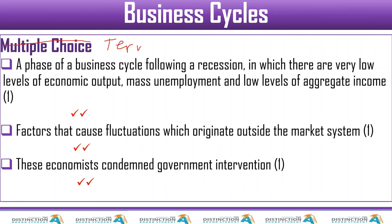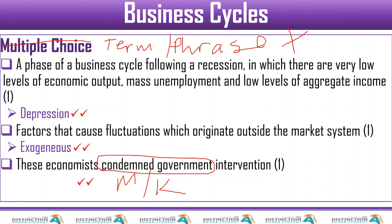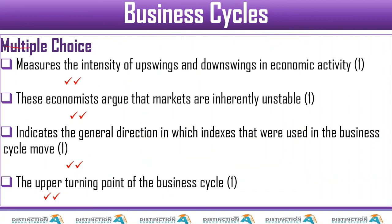A phase of a business cycle following a recession, in which there are very low levels of economic output, mass unemployment, and low levels of aggregate income — that's a depression. Factors that cause fluctuations which originate outside — exogenous. These economists say government should not intervene — we know who it is because the Keynesians say government should intervene — so it's the monetarist.